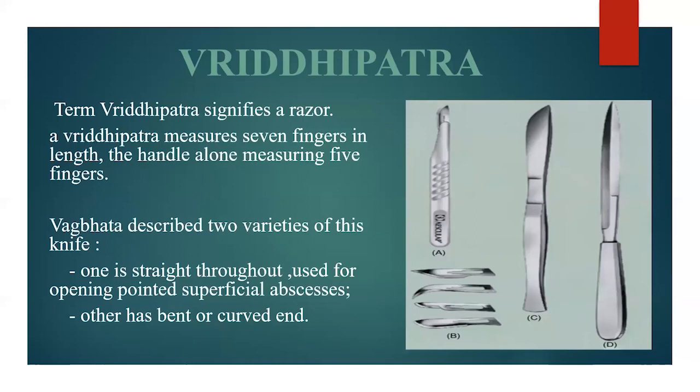Next is Vriddhipatra. The term Vriddhipatra signifies a razor. It measures 7 fingers in length, the handle alone measuring 5 fingers. Acharya Vagbhat describes two varieties: one is straight throughout the length, used for opening pointed superficial abscesses; the other has a bent or curved end.